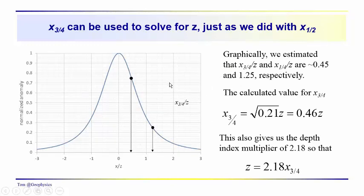So just as we did with x one half, x three quarters can be used to estimate z. We know that x three quarters is equal to 0.46 z, and z then would be equal to 2.18 or 1 over 0.46 times x three quarters. So if you know what this distance is.